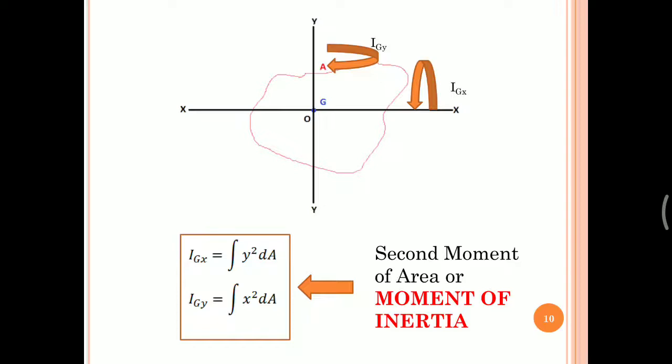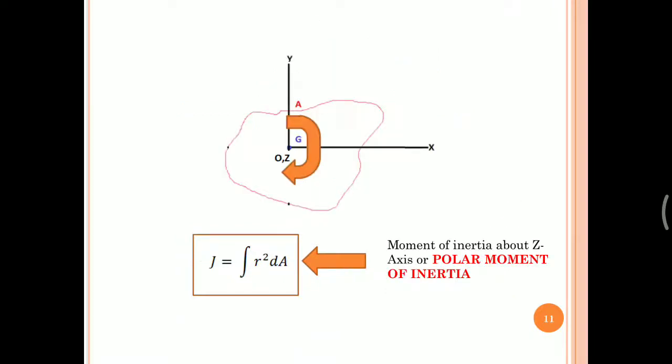In similar fashion, Igy represents the resistance to bending provided by the area against the y-axis. So if you are trying to bend area A with respect to the x-axis, the mathematical measure of the resistance provided is Igx, and that about the y-axis is Igy. Similarly, if you consider an axis z mutually perpendicular to both x and y — since the figure is two-dimensional, z passes through the origin and comes out of the screen.